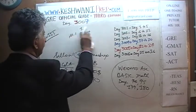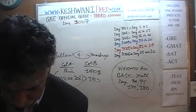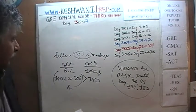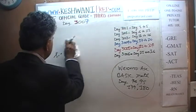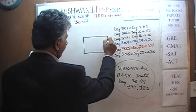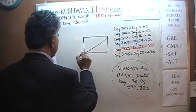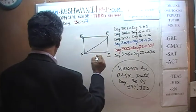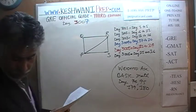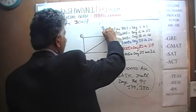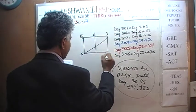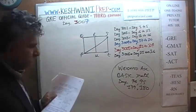Let's do the next one — number 2 on the next page. We have given a picture here: a rectangle with points P, Q, R, S, T, and U. It is divided into half.